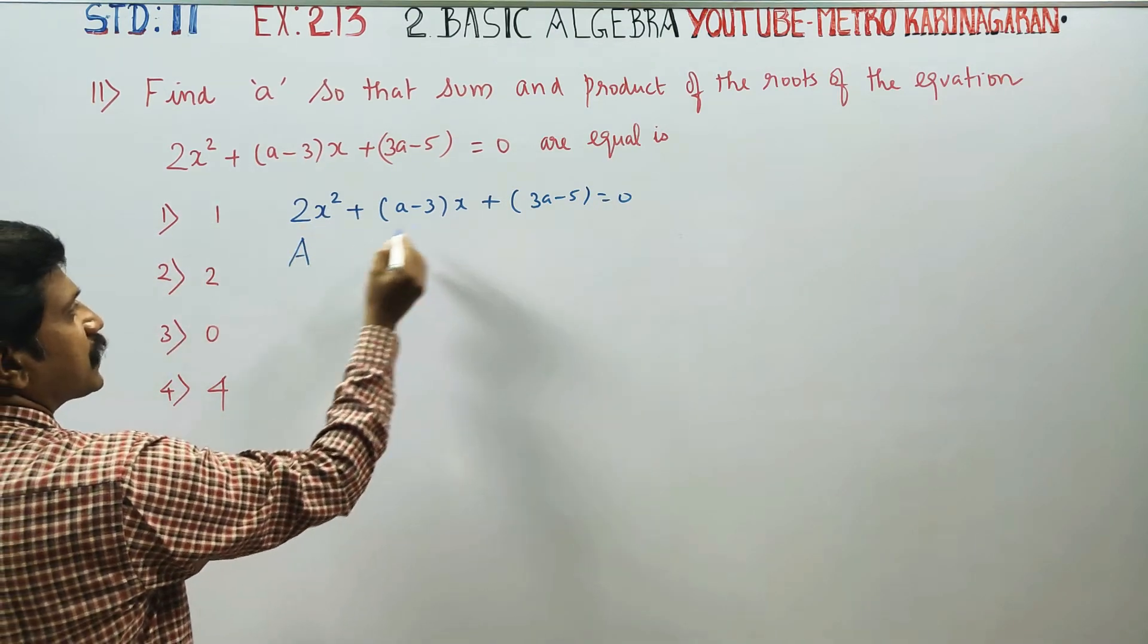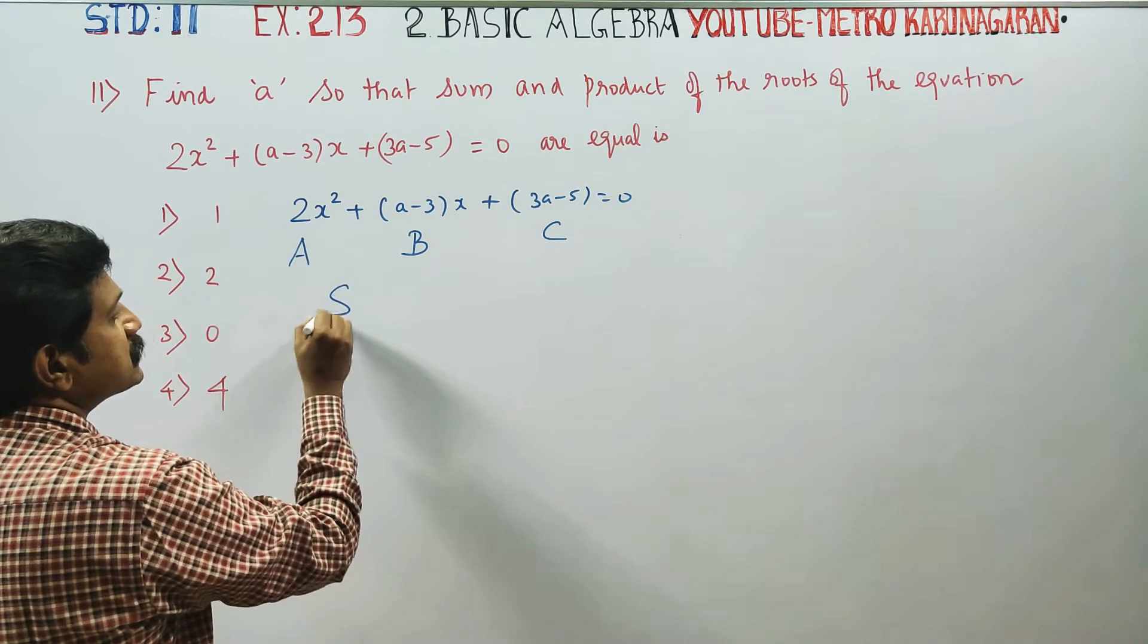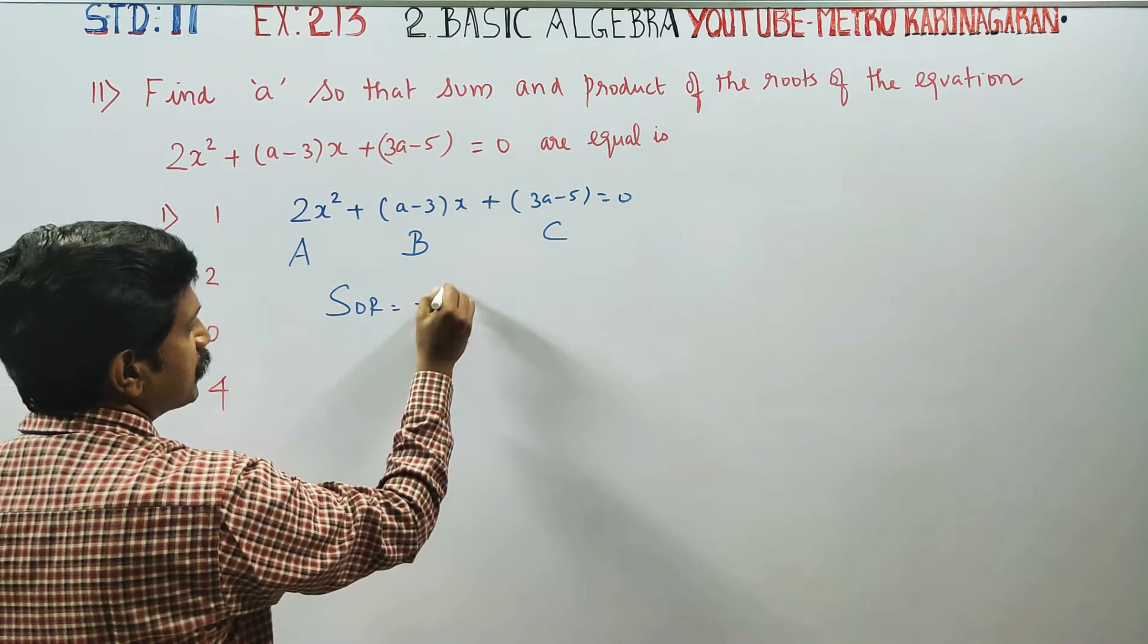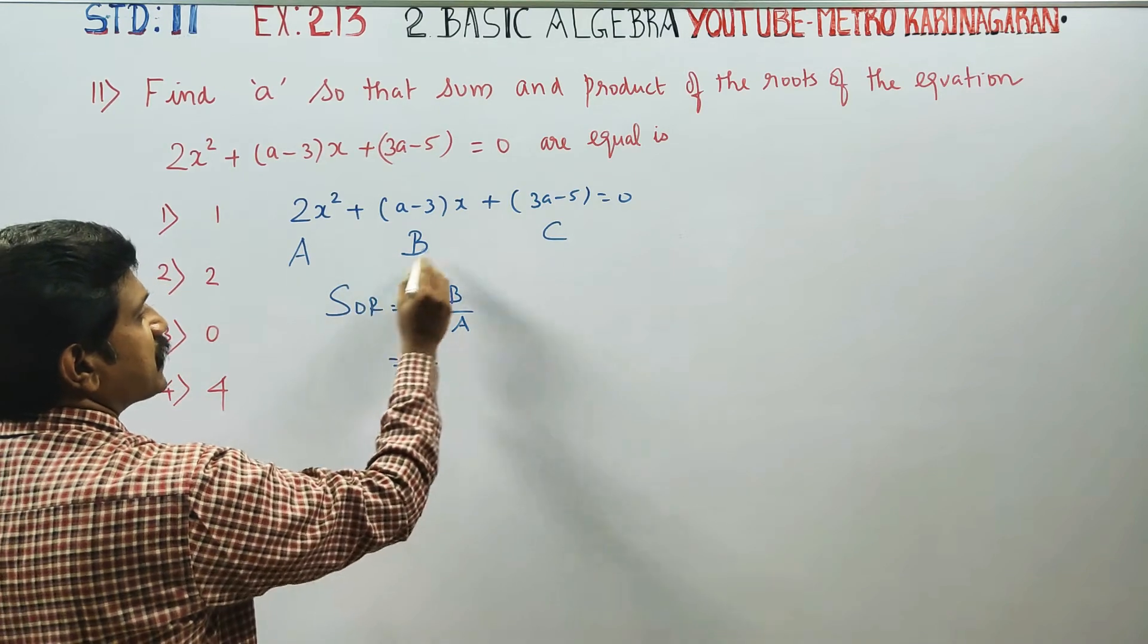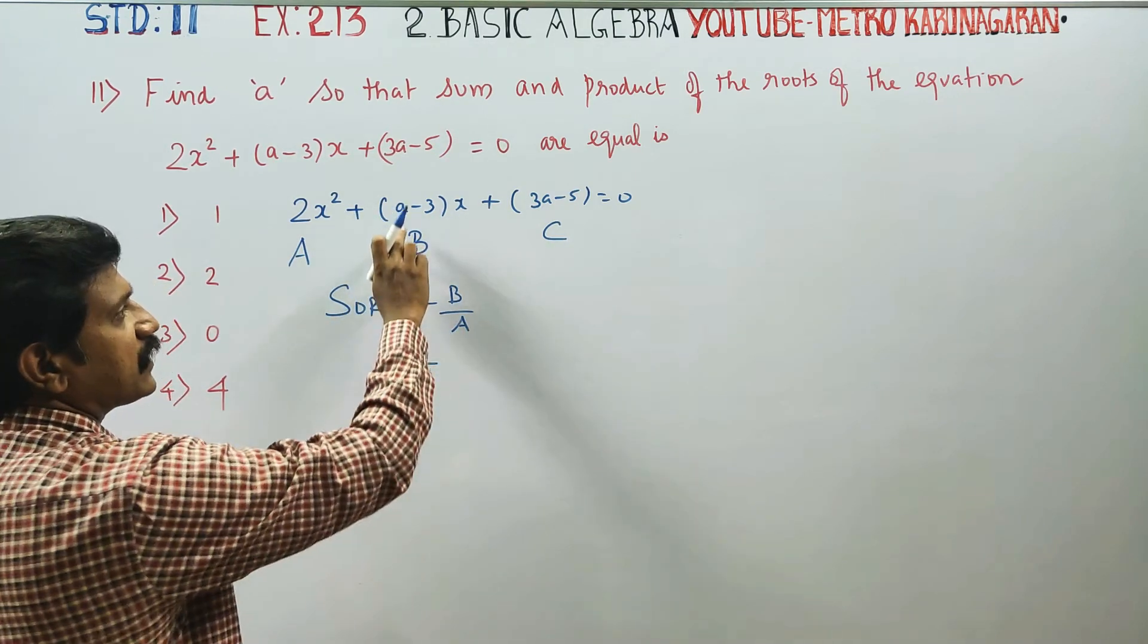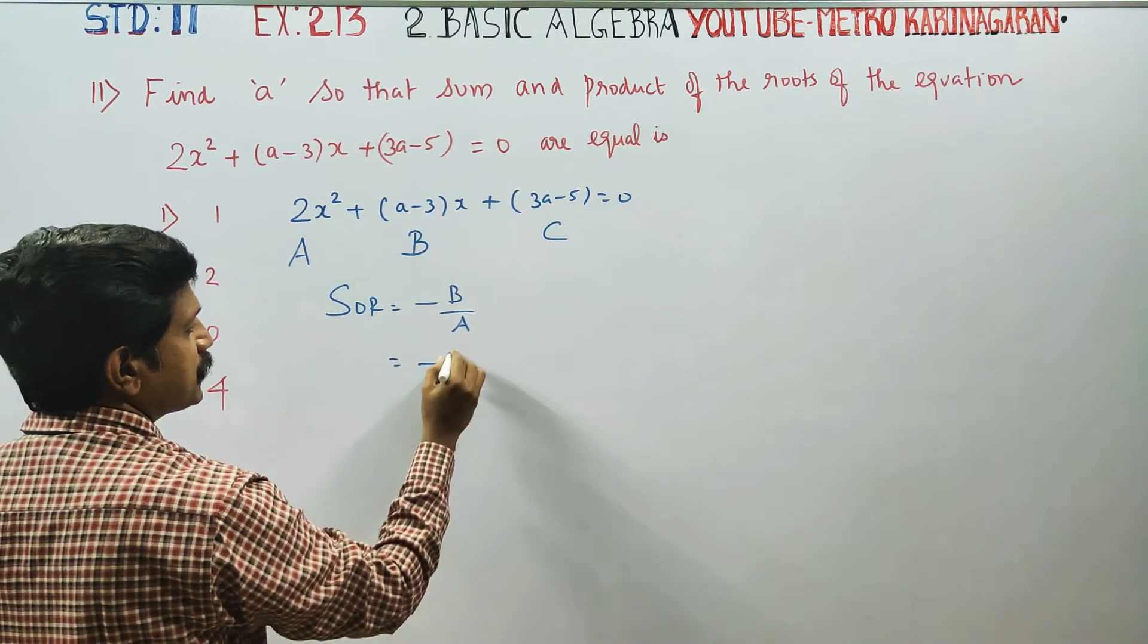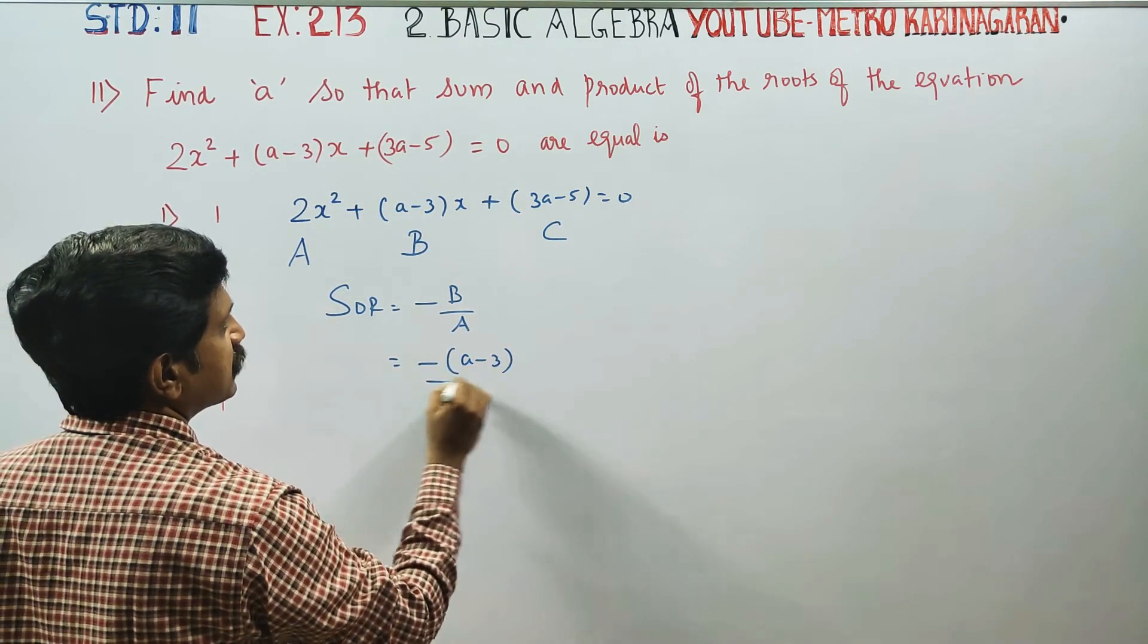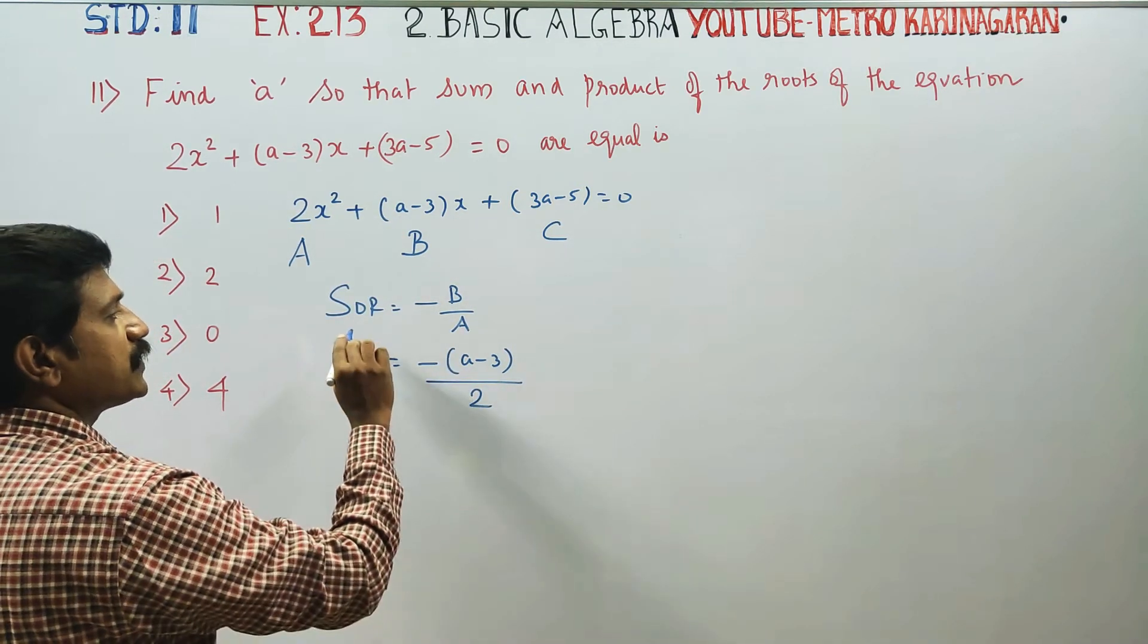For the quadratic equation with coefficients A, B, and C, sum of the roots is -B/A. That is -(A-3)/2. This is the sum of the roots.